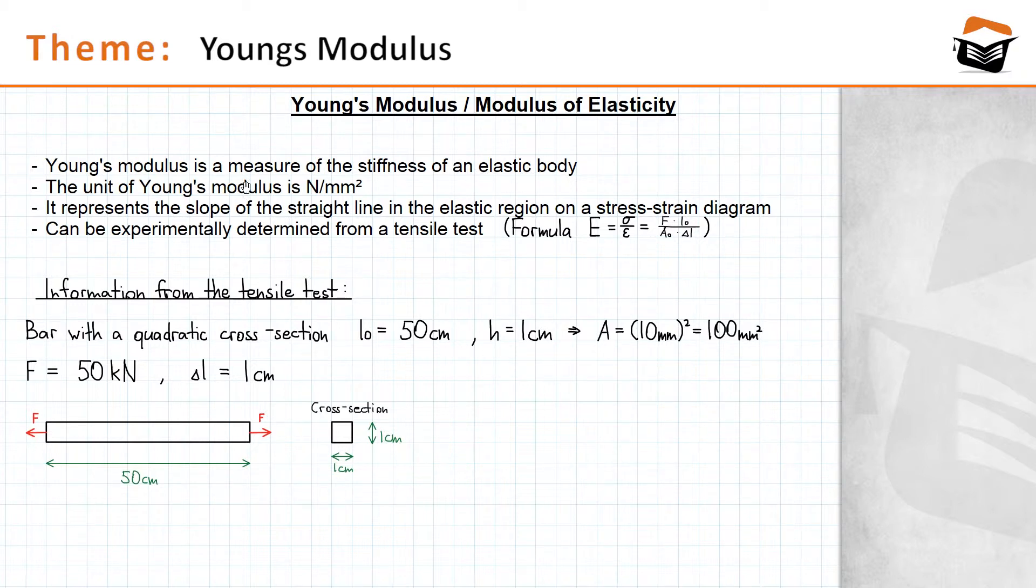The unit of Young's modulus is Newton per square millimeter. That's essentially the same unit as the unit of stress. Why is that? Because Young's modulus is calculated as the stress divided by the strain, and since the stress has the unit Newton per square millimeter and the strain has no unit whatsoever, Young's modulus retains the same unit as stress.